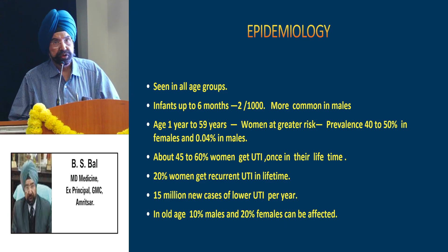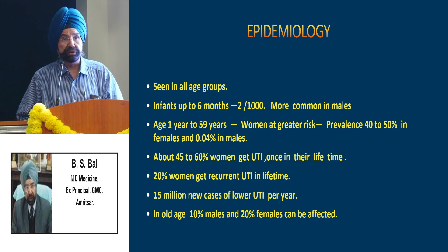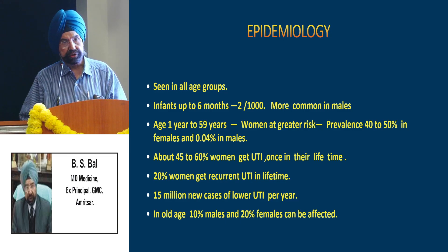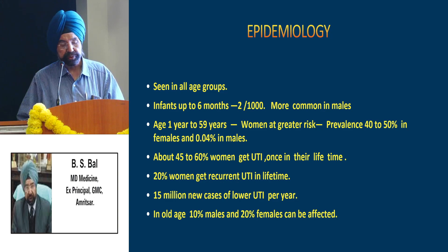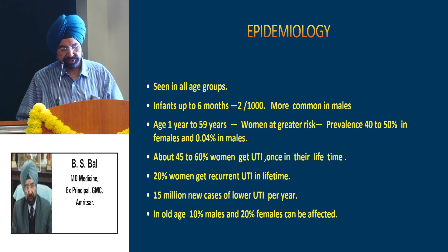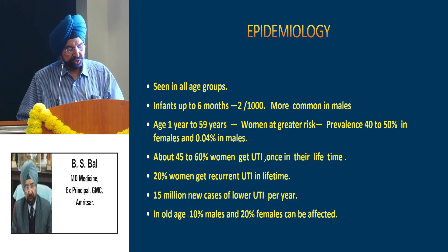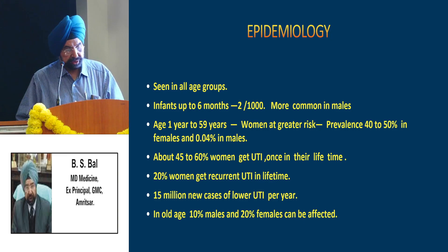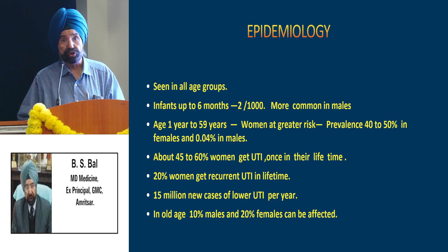UTI is the second most important cause of infection in mankind after respiratory infections. It is seen in all age groups. Even in infants up to 6 months there is an incidence of 2 per thousand live births, and in infants it is more common in males. From age 1 year to 59 years women are at greater risk, with prevalence 40 to 50% in females and only 0.04% in males. About 45 to 60% of women get UTI once in their lifetime, and about 20% get recurrent UTI. About 15 million new cases of lower UTI are seen per year worldwide. In old age the incidence increases in males — about 10% in males and 20% in females — because in old age the prostate becomes enlarged.